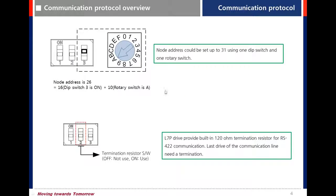Regarding node ID setting, for example to set node address 26, turn on D switch 3 which has the value 16, and turn A on the rotary switch. Turn on D switch 2 to use the termination resistor.